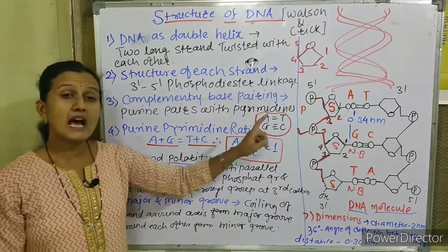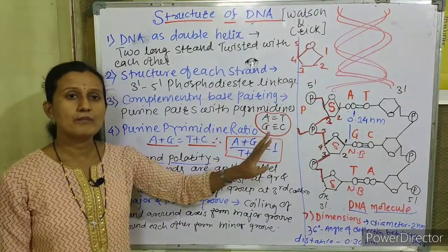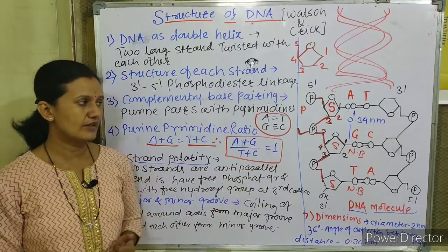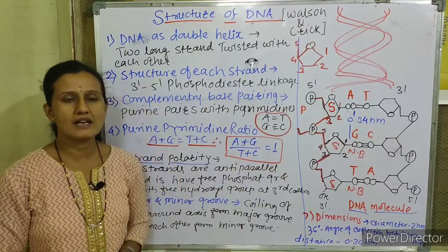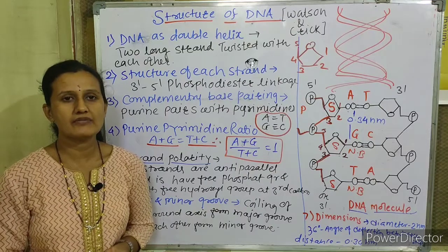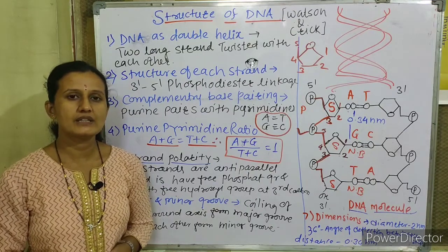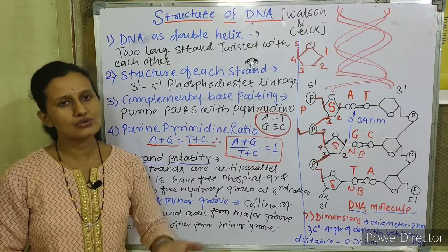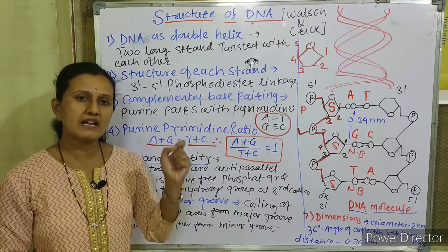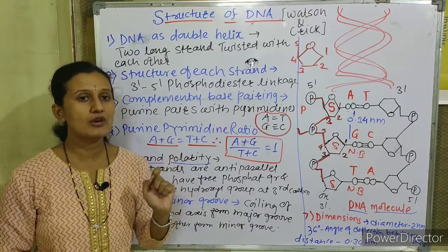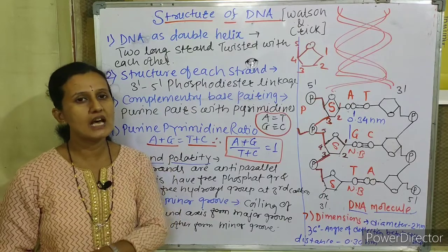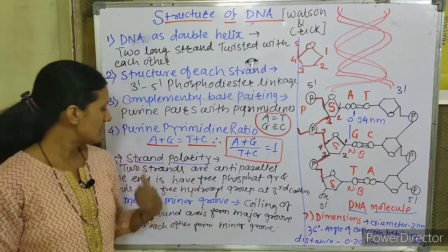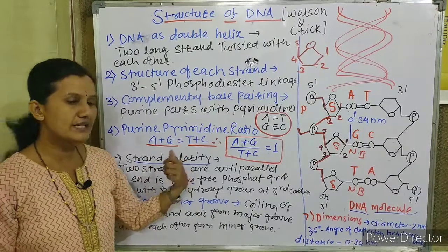Note about RNA: in RNA, the purine-to-pyrimidine ratio may or may not be equal to one, because RNA is single-stranded. There is no rule that the number of adenines must equal the number of uracils or that guanine must equal cytosine, so the purine-pyrimidine ratio in RNA is not fixed.